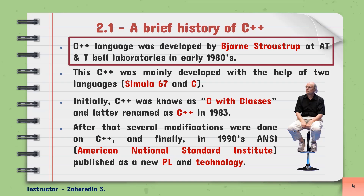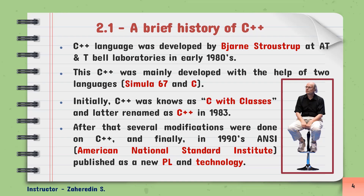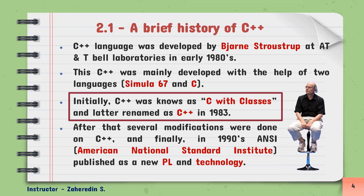As you see here, C++ language was developed by Danish computer scientist Bjarne Stroustrup at AT&T Laboratory in the early 1980s. This C++ was mainly developed with the help of two languages. When this computer scientist Bjarne Stroustrup was doing work for his PhD thesis, one of the programming languages he worked with was a language called Simula. The Simula language is regarded as the first language to support the object-oriented programming paradigm. This Danish scientist found that this object-oriented paradigm was very useful for software development.